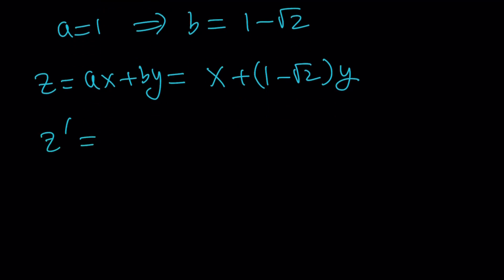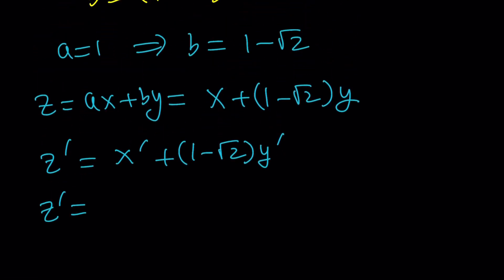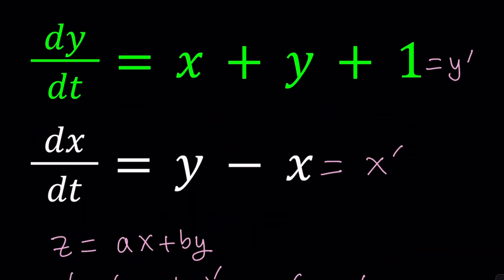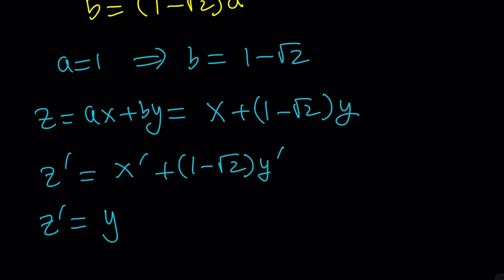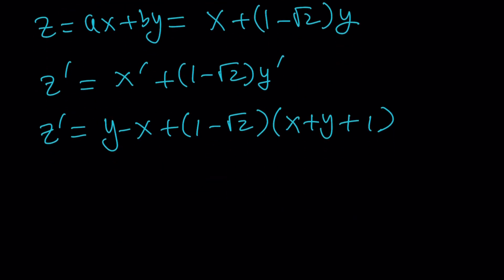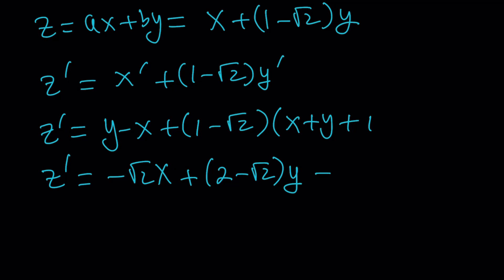Now we're going to do z prime — just differentiate it. It's supposed to be x prime plus 1 minus root 2 multiplied by y prime. Remember, x and y are functions of t, so x prime and y prime are with respect to t. The next step is being able to write z prime as a multiple of z plus a constant, and that constant is going to be b, which is 1 minus root 2. So let's replace x prime with y minus x, plus 1 minus root 2 times y prime, which is x plus y plus 1. Arranging the terms, we get negative root 2·x plus 2 minus root 2 times y, with a leftover constant of 1 minus root 2.